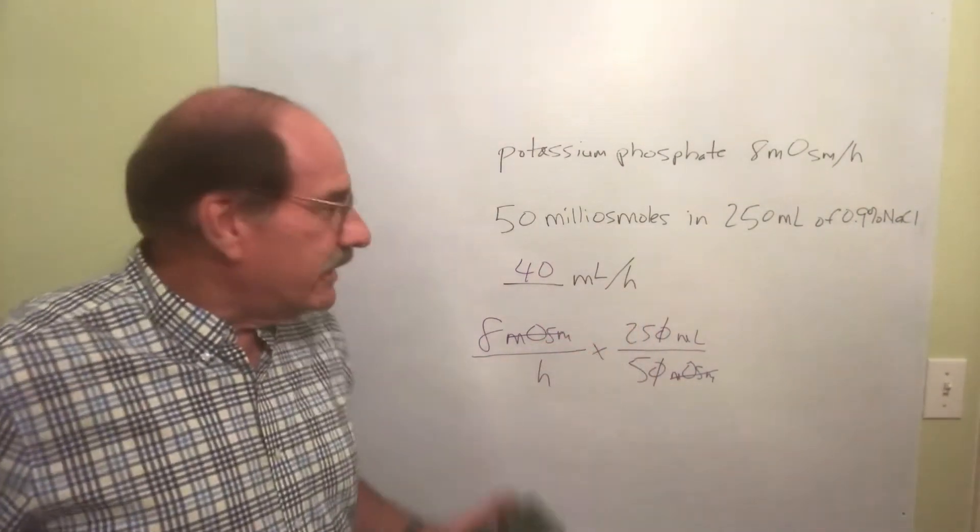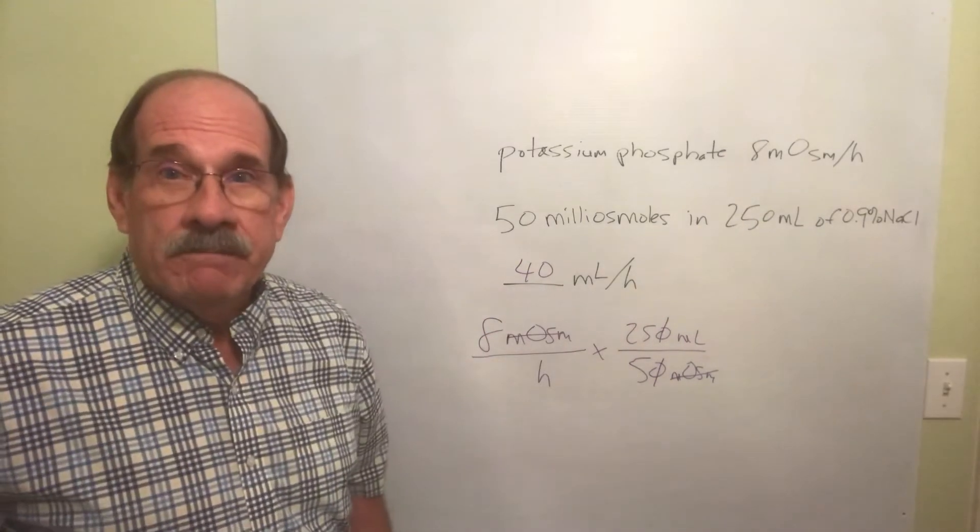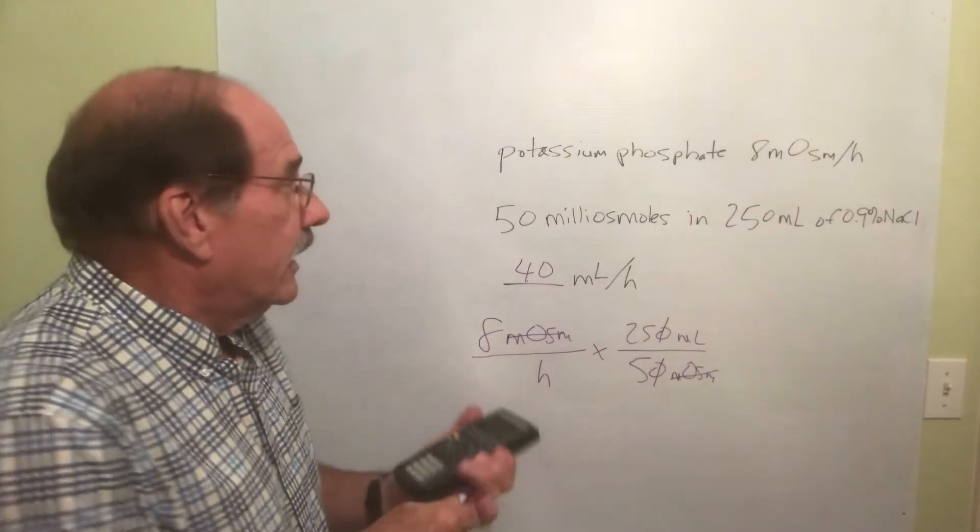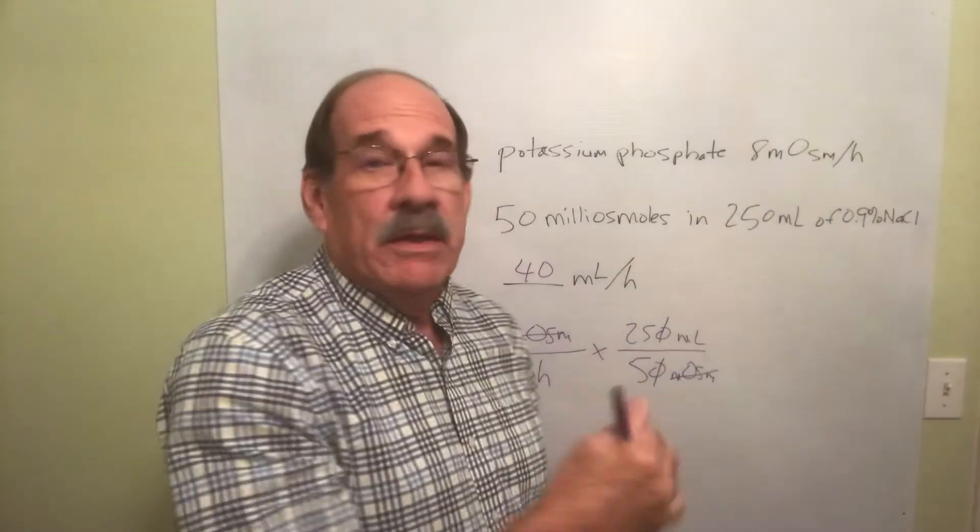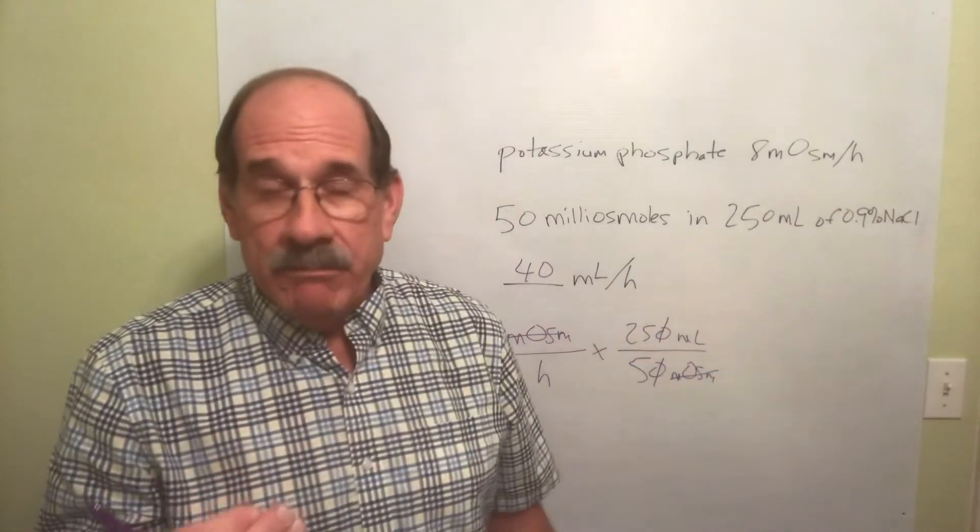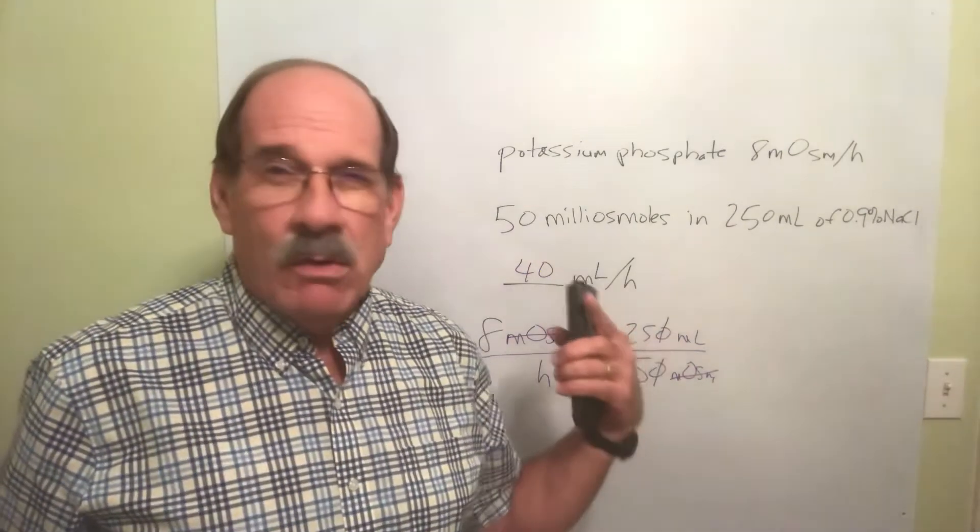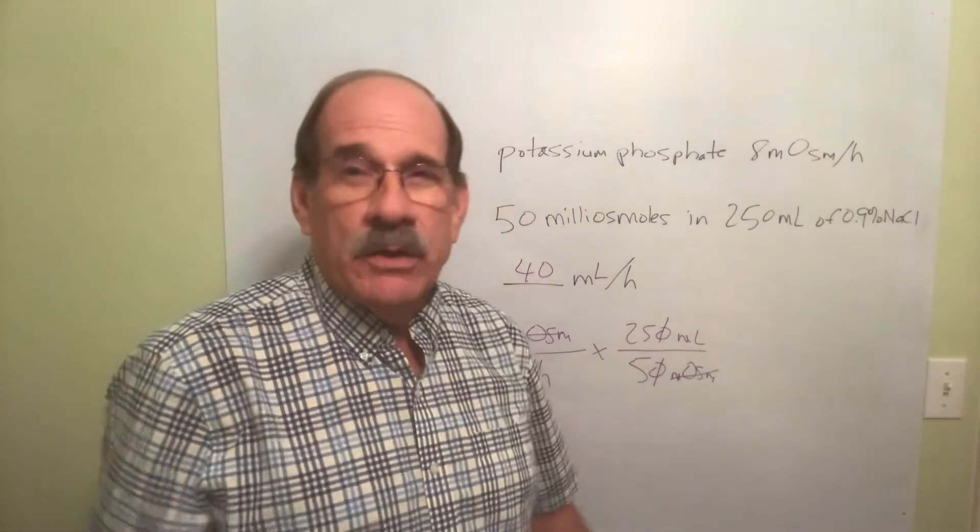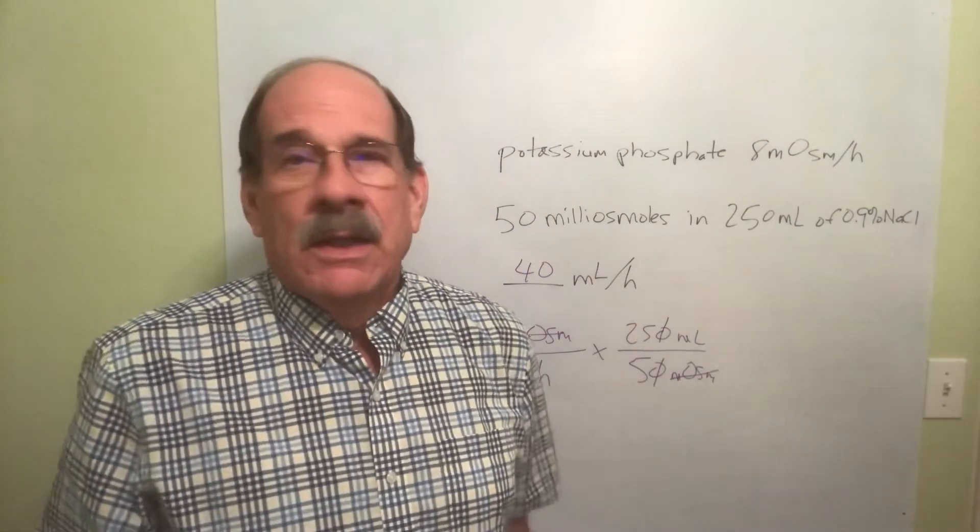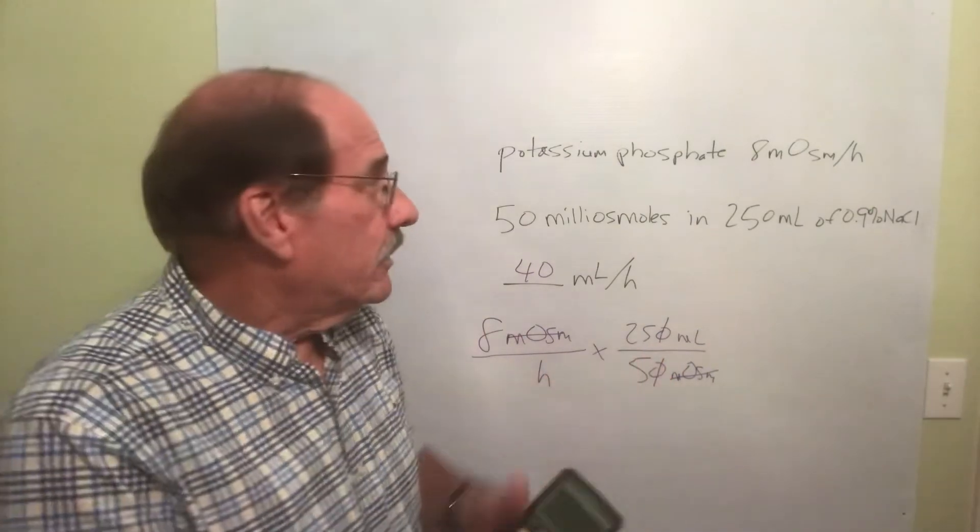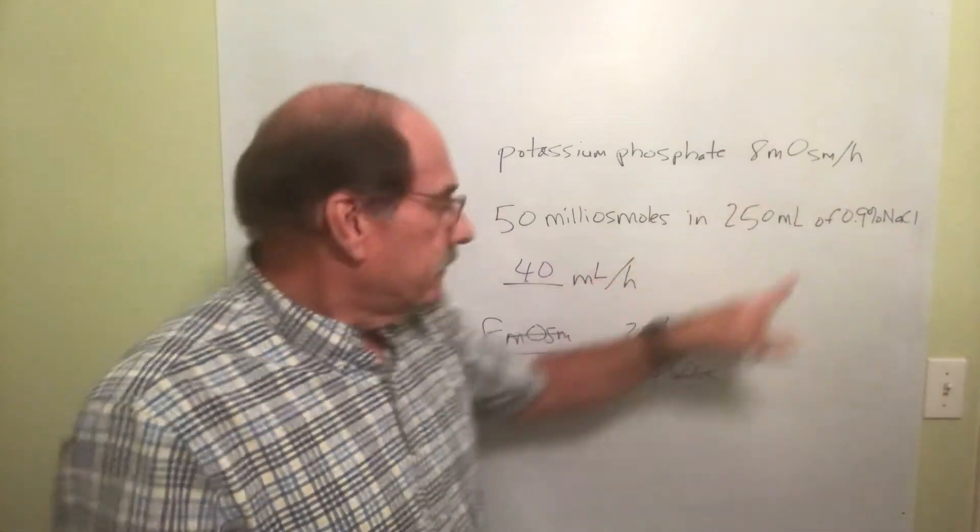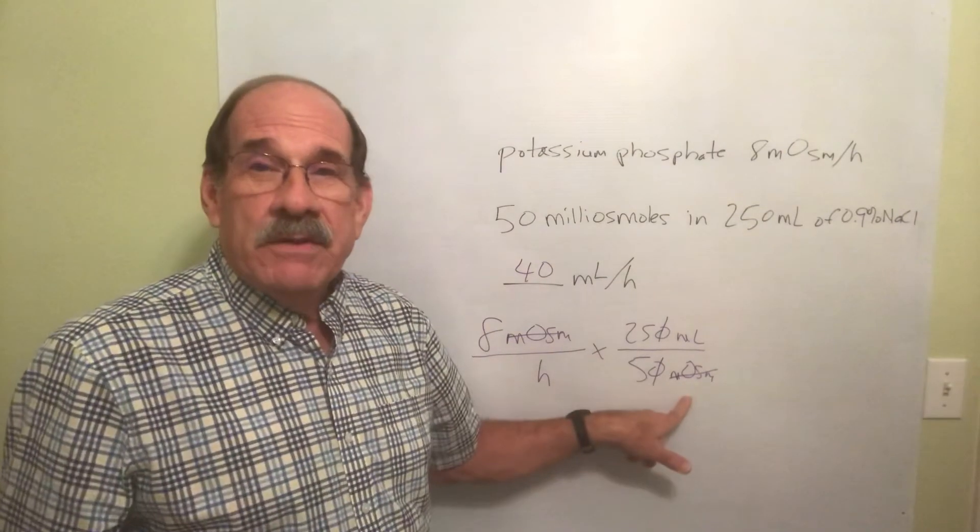So it doesn't matter if this is told to you as so many milligrams per hour, or grams per hour, or micrograms per hour, or milliosmoles per hour. We'll see some other units per hour. It's all done the same way. Whatever the order is, and whatever weird thing here, you'll be told how much of that stuff there is in some given amount of IV fluid, and set it up this way.